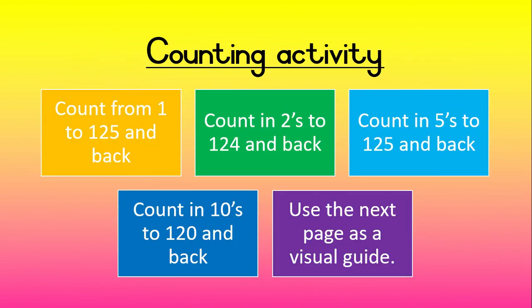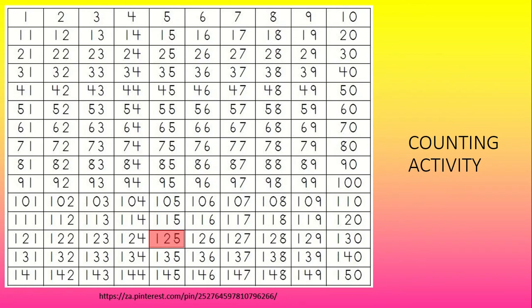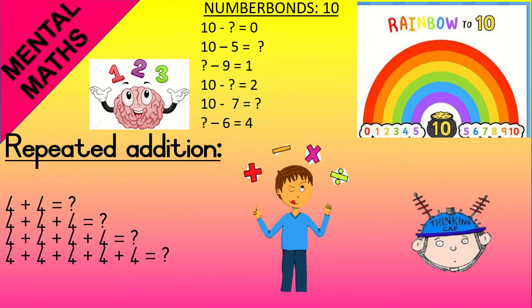For the counting activity, please look on the screen and do as follows. Please pause this page as the children do the counting activity. For Mental Maths, only allocate 1 minute per section for the number bonds of 10 and for the repeated addition of 4.